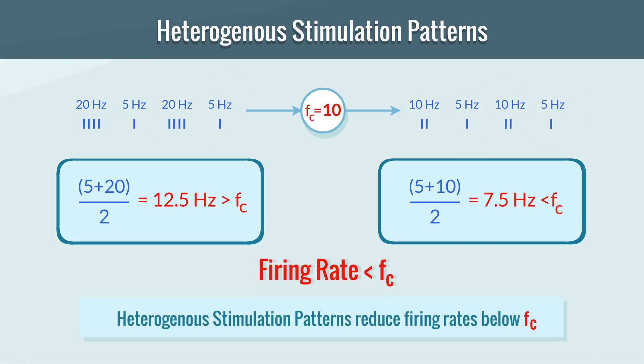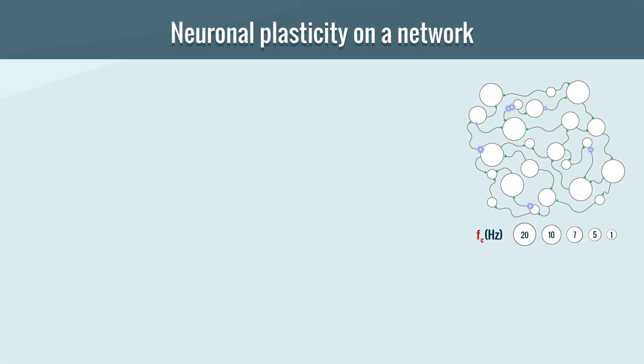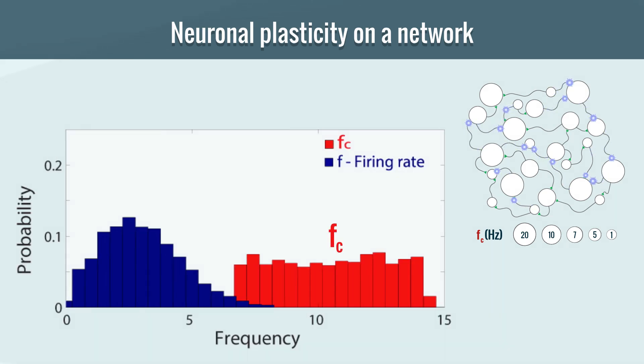Hence, heterogeneous stimulation patterns reduce firing rates below fc. Let's look at a network using these two mechanisms. Assume the fc of the neuron is flatly distributed between 6 and 15.